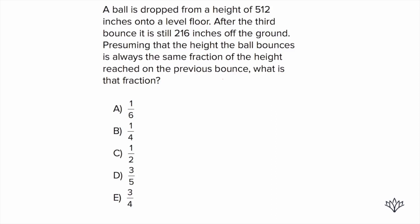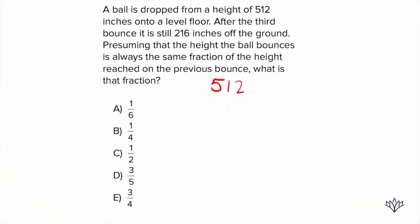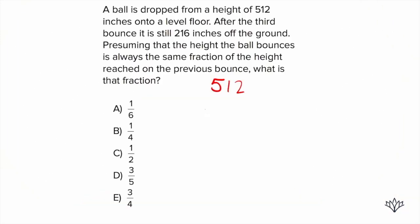We started with 512 inches — so it was 512 inches off the ground. Then what do we know happens? It bounces, and each time, the height is always the same fraction of the height reached on the previous bounce. So every time it bounces, it's being multiplied by the same fraction. And after three bounces, we end up with 216.